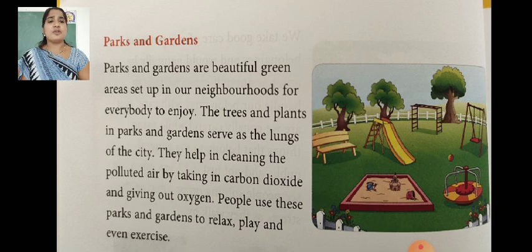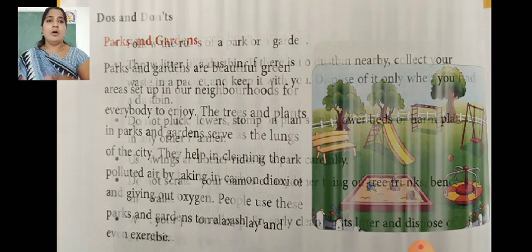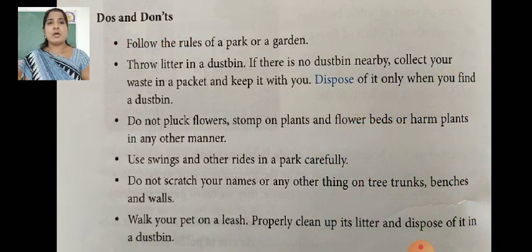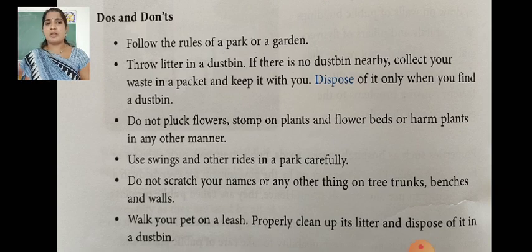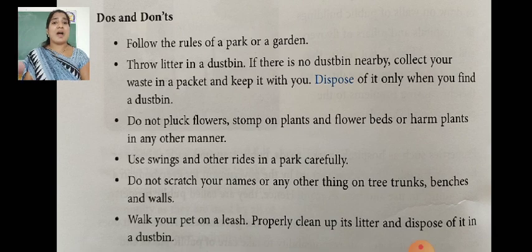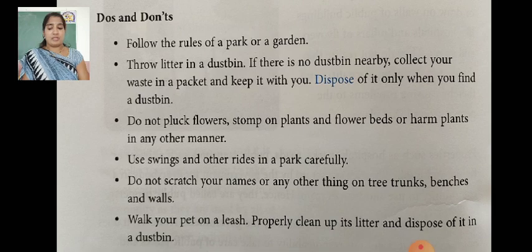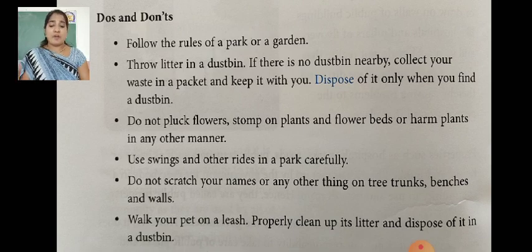People use parks and gardens to relax, play, and even exercise. So what are the things we have to do and what are the things we don't? Follow the rules of a park or garden. Throw litter in a dustbin. If there is no dustbin nearby, collect your waste in a packet and keep it with you, and dispose of it only when you find a dustbin.